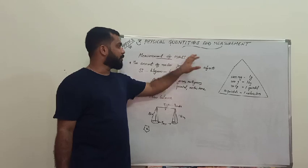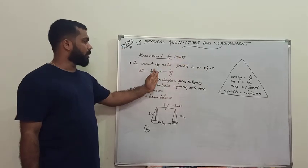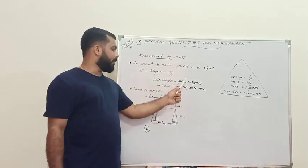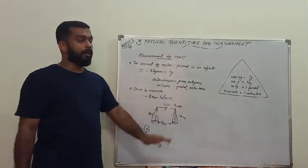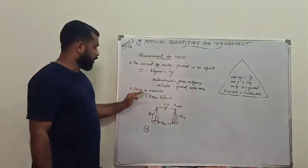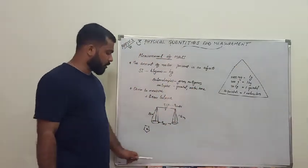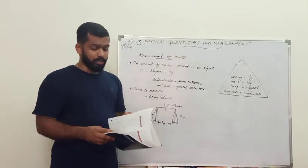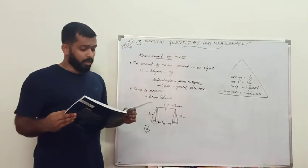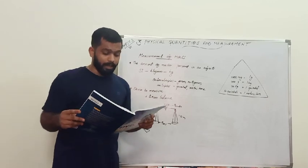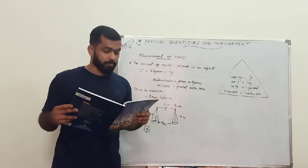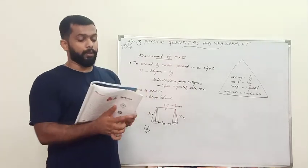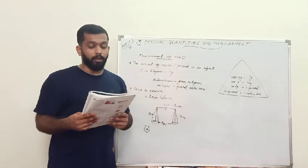To summarize: the amount of matter present in an object is called mass. The SI unit of mass is kilogram, represented by 'kg'. Devices to measure mass include the beam balance, electronic balance, and physical balance. This is the end of this section. In the next class, we will discuss measurement of time and measurement of temperature.